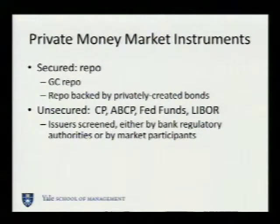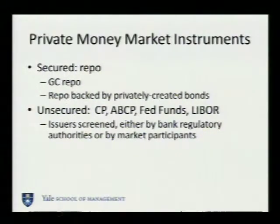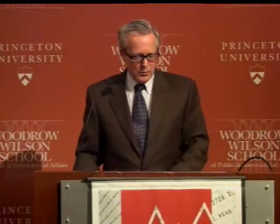So what are money market instruments? We're going to look at secured money market instruments. A repo is the only secured category. General collateral repo is repo backed by treasuries, and then there's repo backed by privately created bonds. Then there's unsecured money market instruments, which are commercial paper, asset-backed commercial paper, Fed funds, and LIBOR. For these instruments, you're not actually given collateral when you lend, but the entities that can issue in this market are very carefully screened.